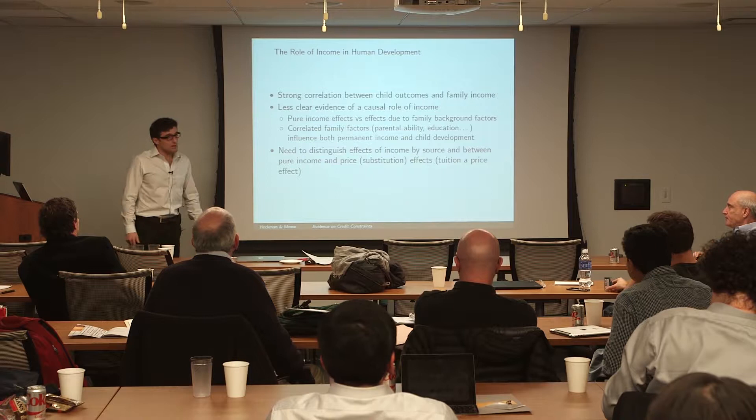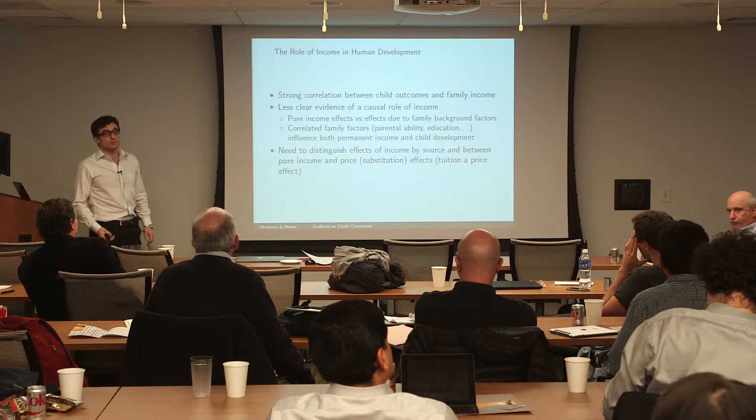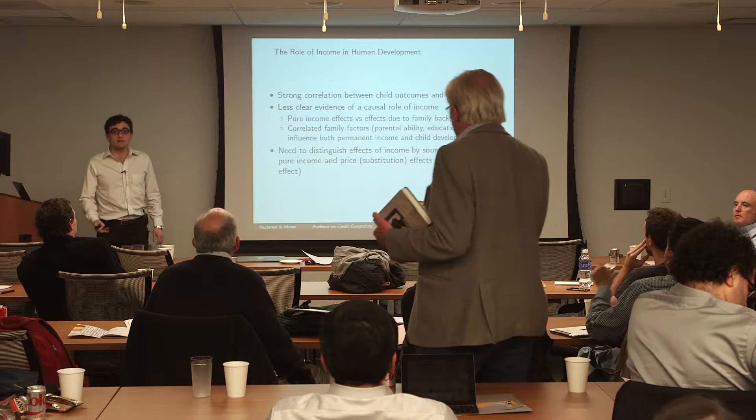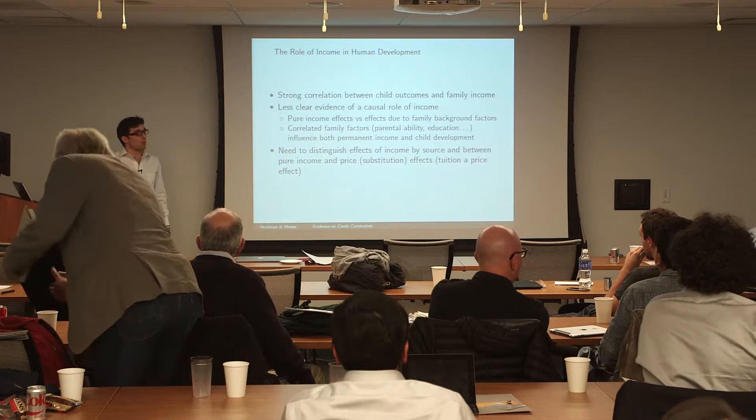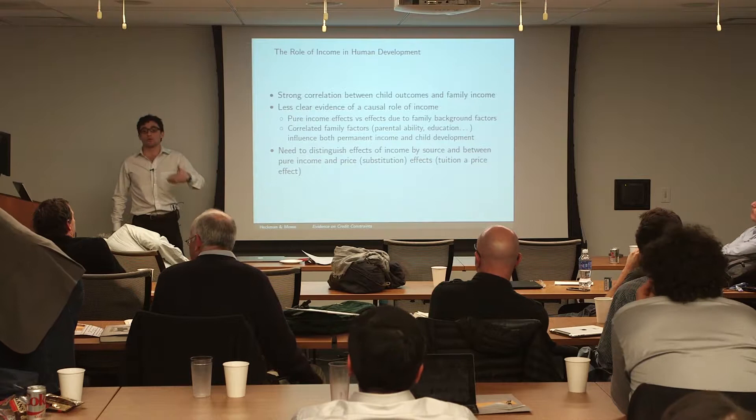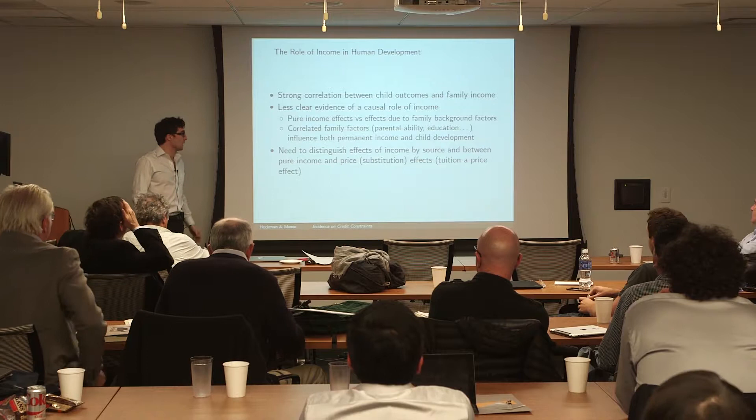As we've seen in some of the talks, especially the one from Professor Lochner before, there seems to be a strong correlation between child outcomes and family income. However, it is less clear whether income plays a truly causal role, or whether it is more a proxy for correlated family factors such as parental ability, education, or factors we cannot directly control for, which influence both permanent income and child development.